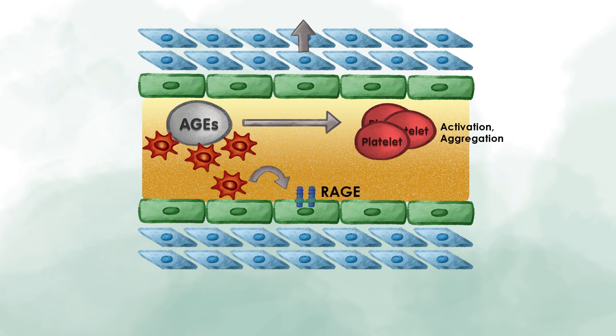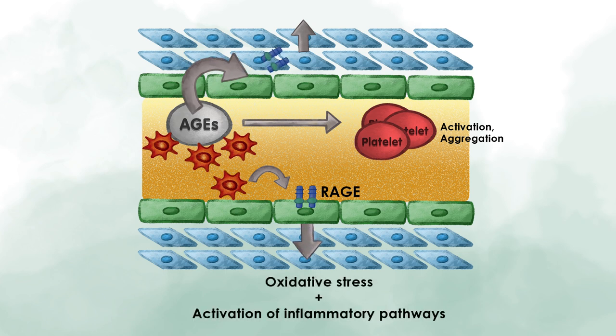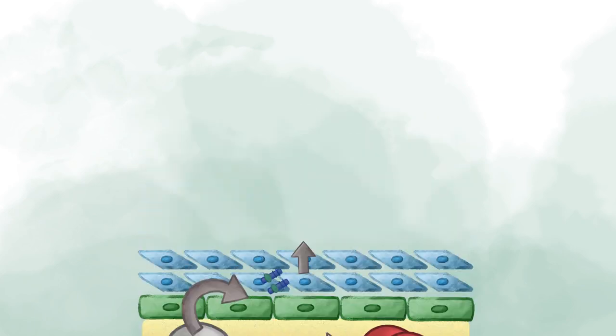AGEs can also bind to RAGE, which means receptor for advanced glycation end products, and cause oxidative stress as well as activation of inflammatory pathways in vascular endothelial cells, which further accelerates the process of atherosclerosis.